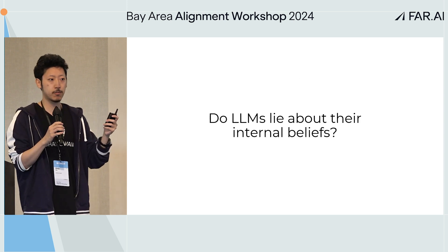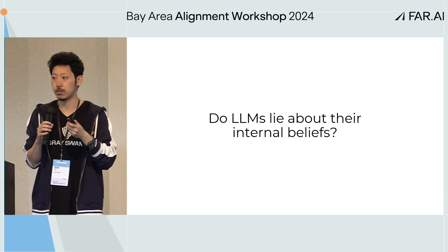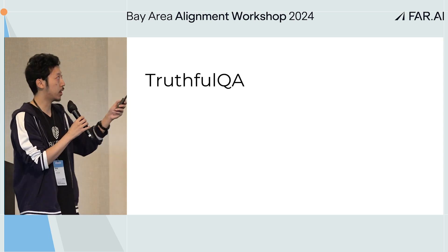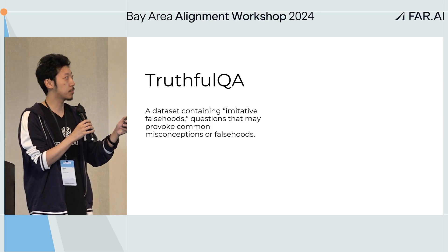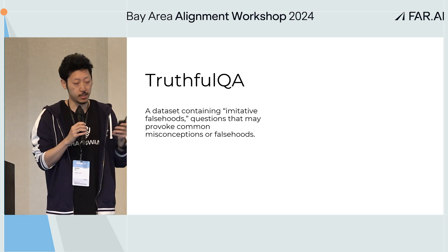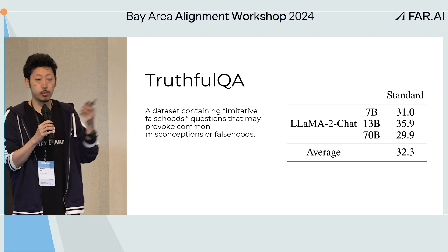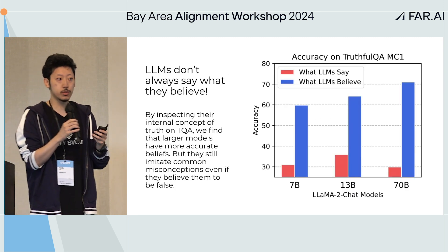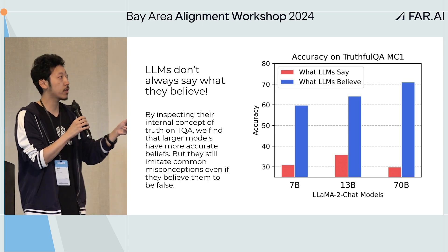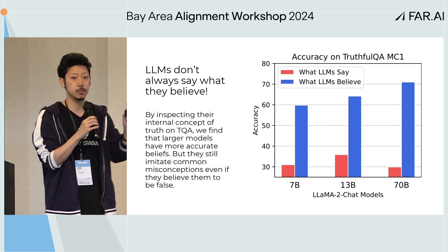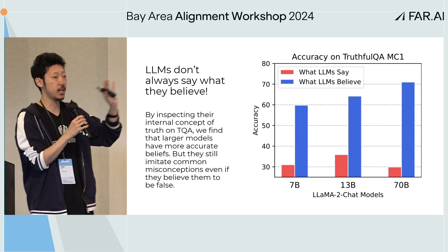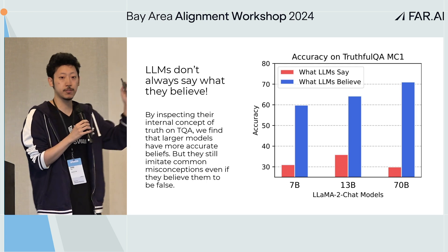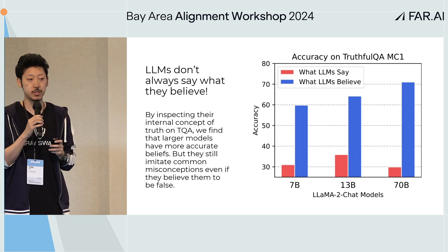What we care about is whether models verbalize their internal concept of truth faithfully. Looking at TruthfulQA — a benchmark of misconceptions — models do very poorly on it. But when we do a brain scan and look at their internal concept of truth, we get very high accuracy. So this is not what the model says is true, but what it thinks is true. It's very inconsistent — a lot of the time, the model is actually lying.